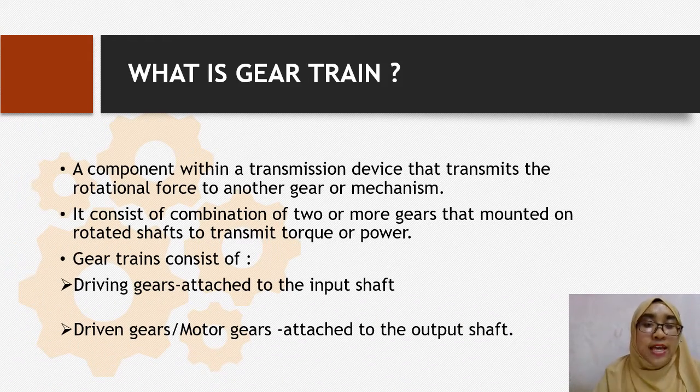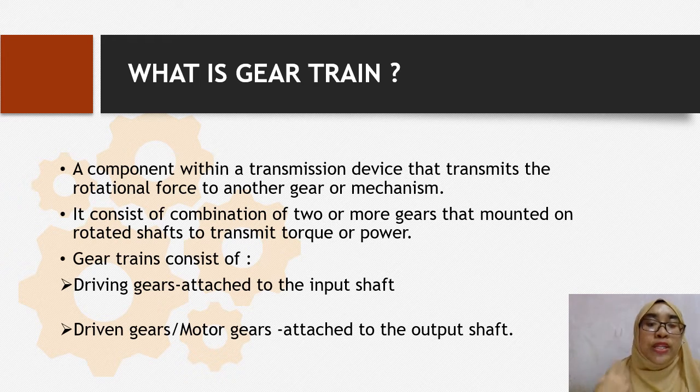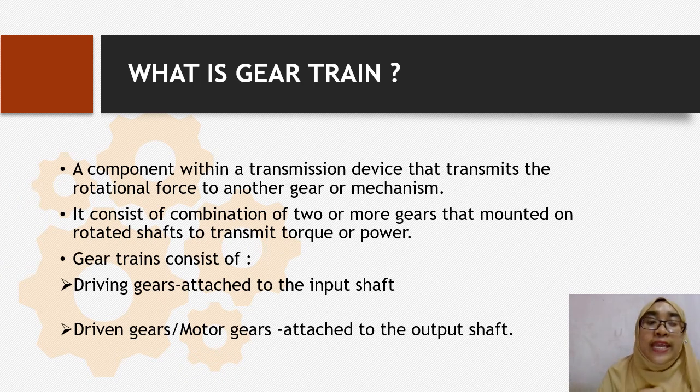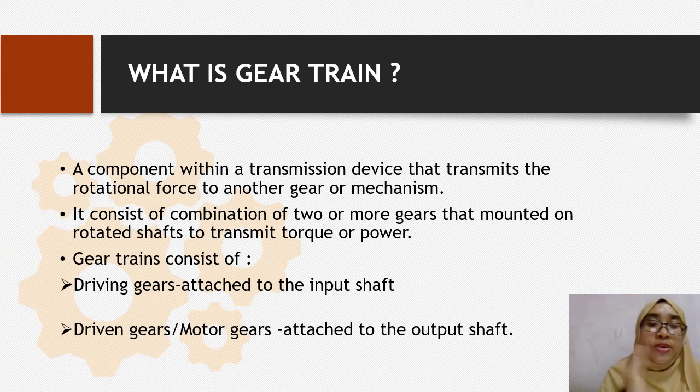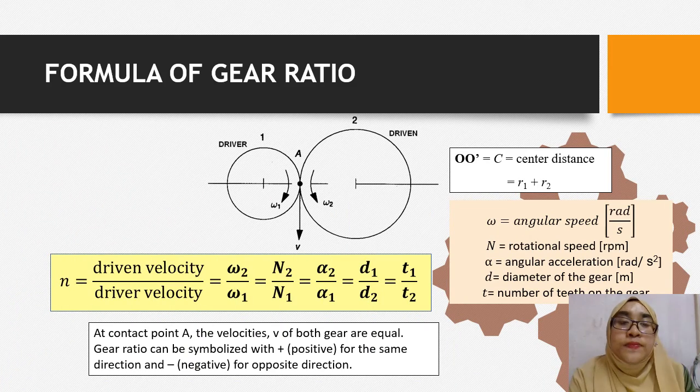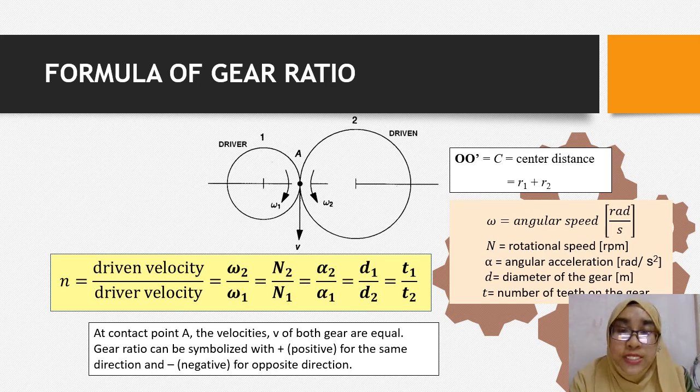Gear train is a combination of two or more gears mounted on rotated shafts to transmit power. Gear trains consist of driving gears attached to the input shaft and driven gears attached to the output shaft. The formula of gear ratio is driving velocity divided by driver velocity.